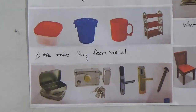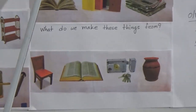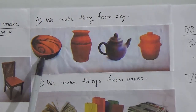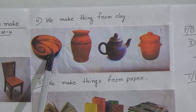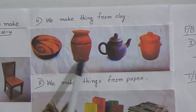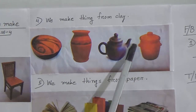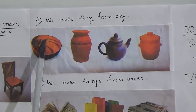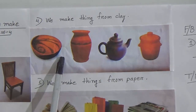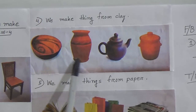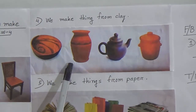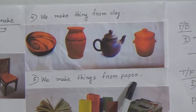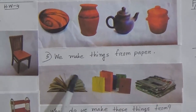Point number four: we make things from clay. You can see here is a bowl, here is a vase, here is a teapot, and here is another pot — these all are made from clay. This is called pottery, and we get this clay from soil.